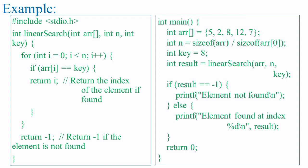It uses a for loop to iterate through each element of the array and compares it with the key value. If a match is found, the function returns the index of the element. If the entire array is traversed without finding a match, the function returns minus 1.